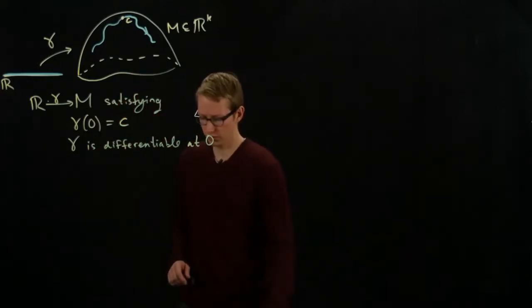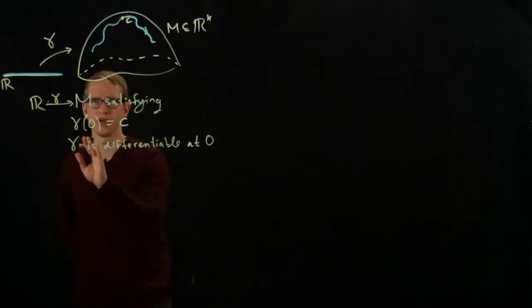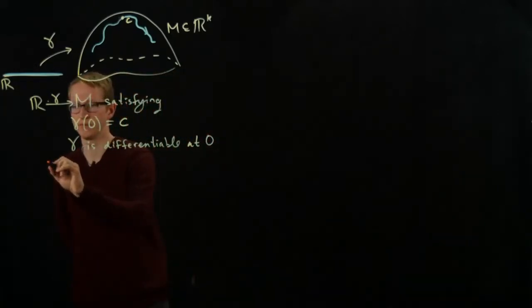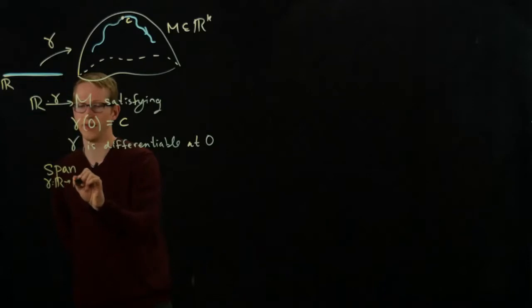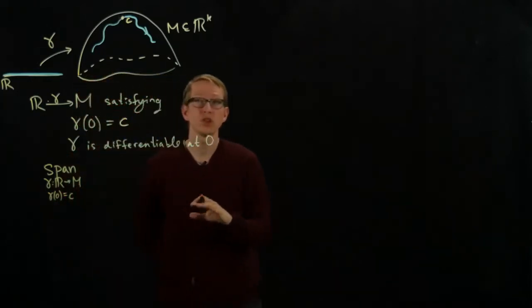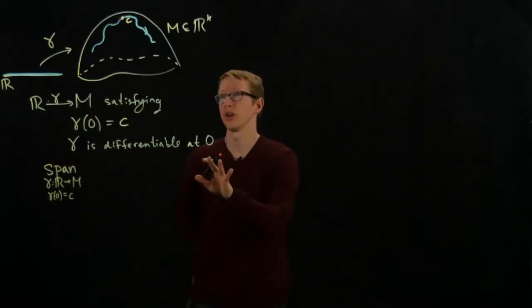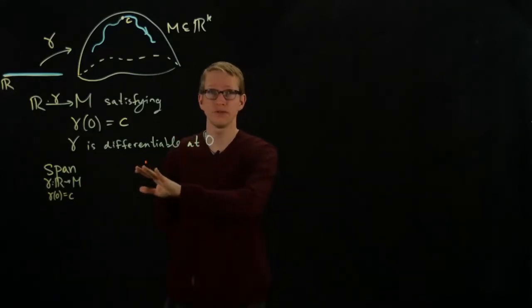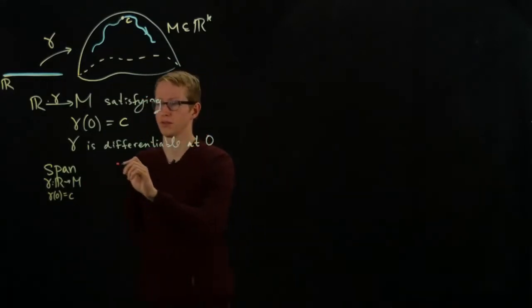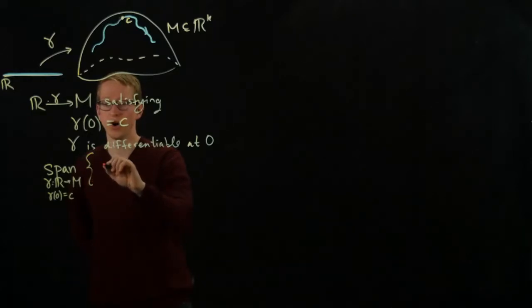And what we can do is we can take the derivative of this function gamma, and in fact, we can look at the span of all such gamma, gamma from the set of real numbers to M that are differentiable and satisfy gamma of 0 equals C. So this is a huge set. We're looking at all possible curves, as long as they're differentiable and they pass through C.